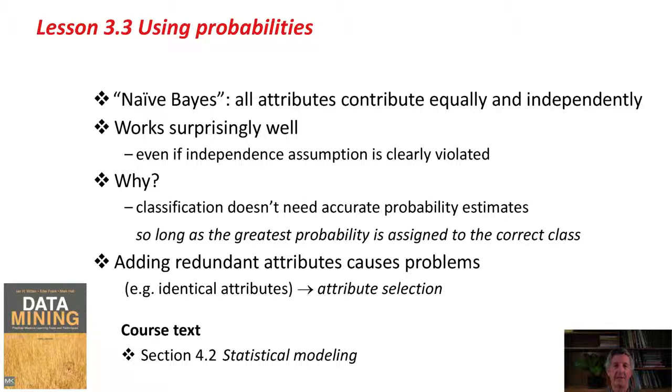This actually means that if you add redundant attributes, you get problems with Naive Bayes. The extreme case of dependence is where two attributes have the same values. Identical attributes. That will cause havoc with the Naive Bayes method. However, Weka contains methods for attribute selection to allow you to select a subset of fairly independent attributes, after which you can safely use Naive Bayes. There's quite a bit of stuff on statistical modeling in Section 4.2 of the course text.